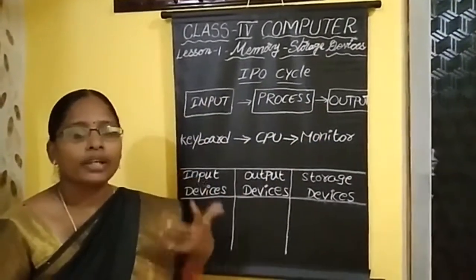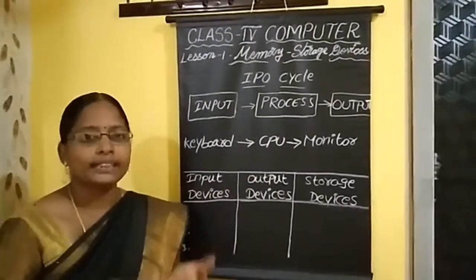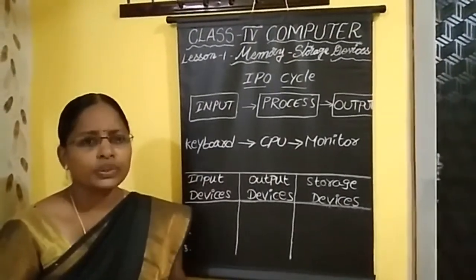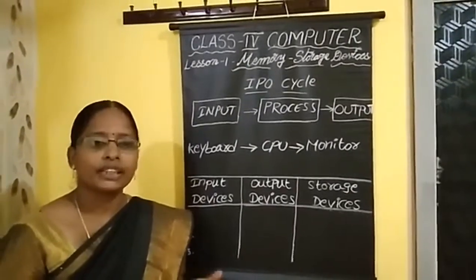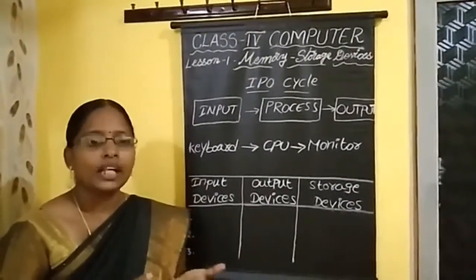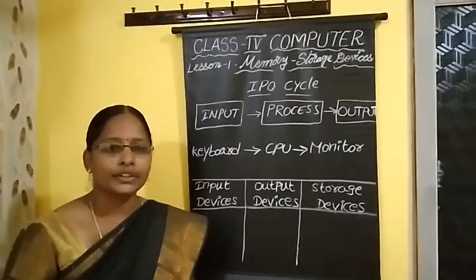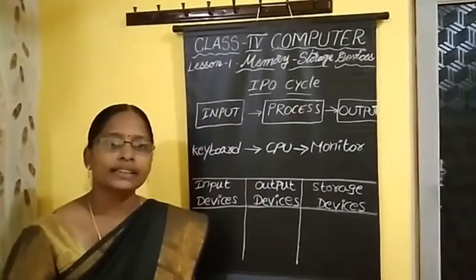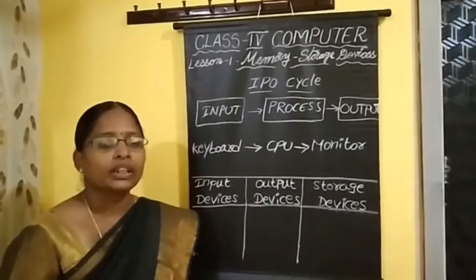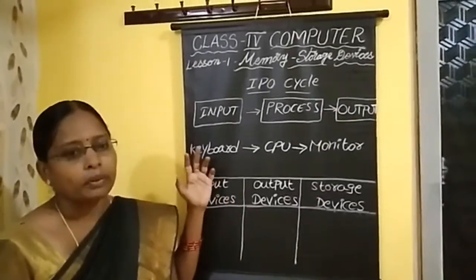One more example: we have some water as input. We use a refrigerator for freezing the water — that is the process. Finally we get ice cubes as output. In terms of a computer, this is the IPO example.